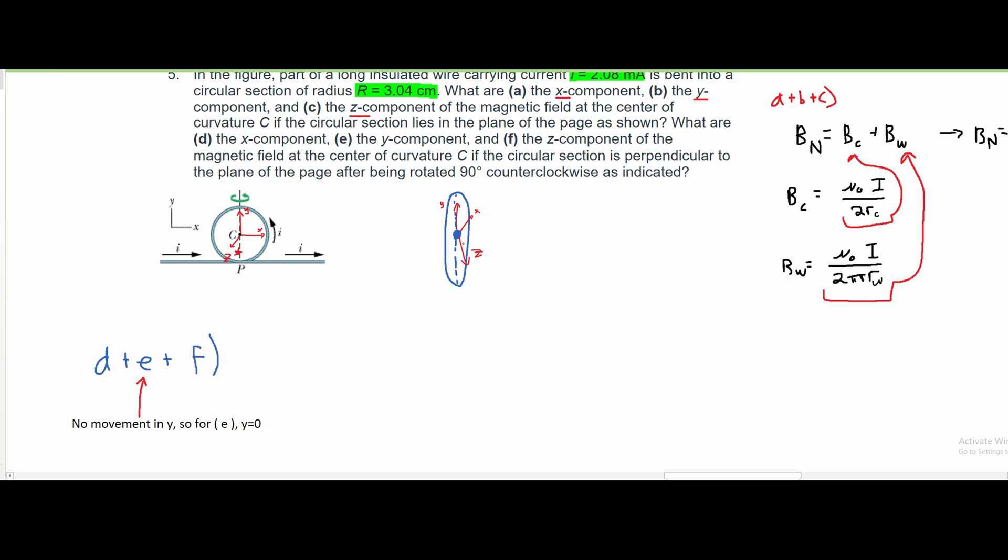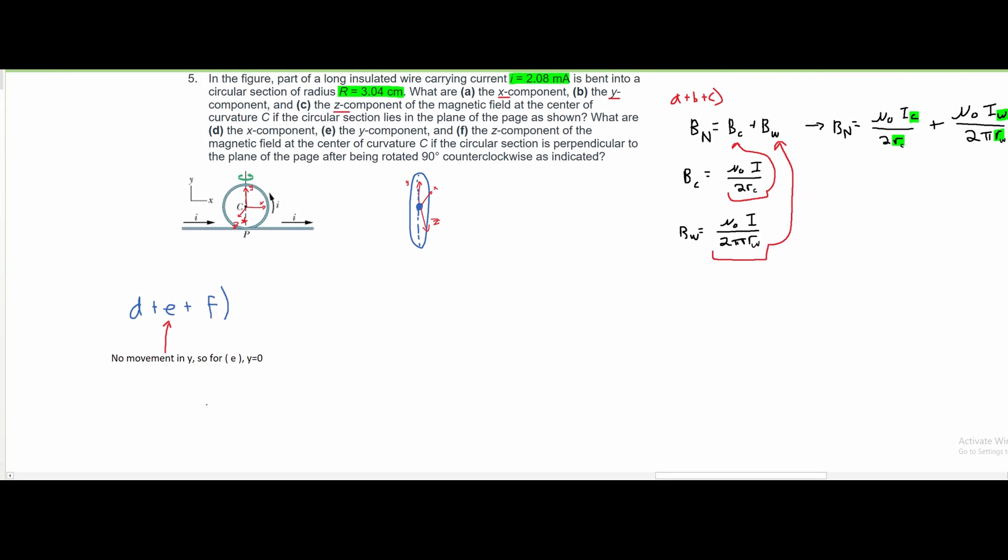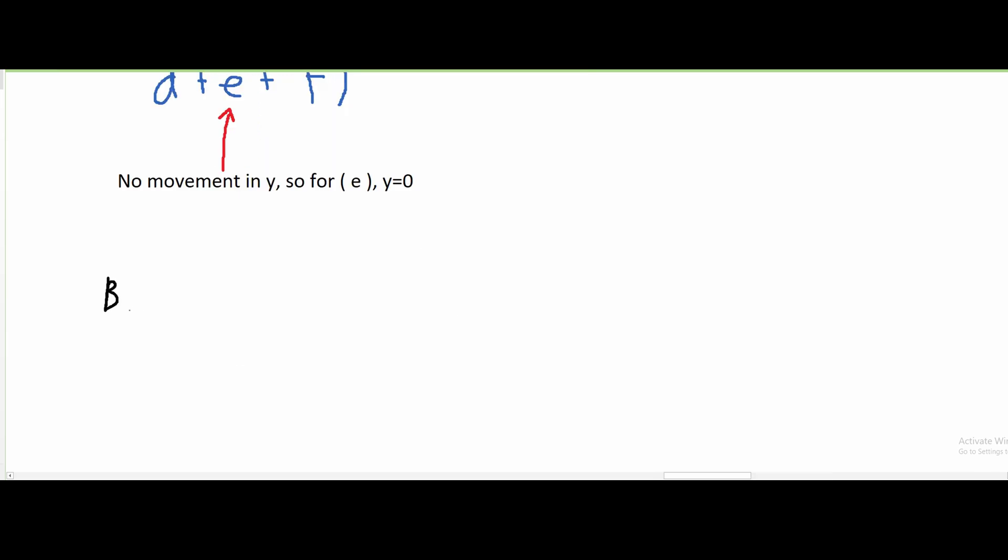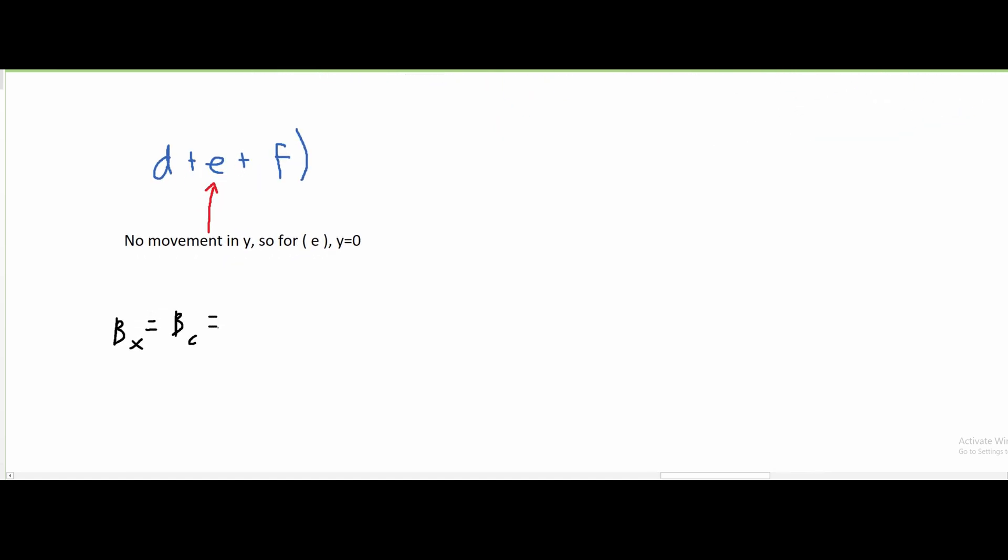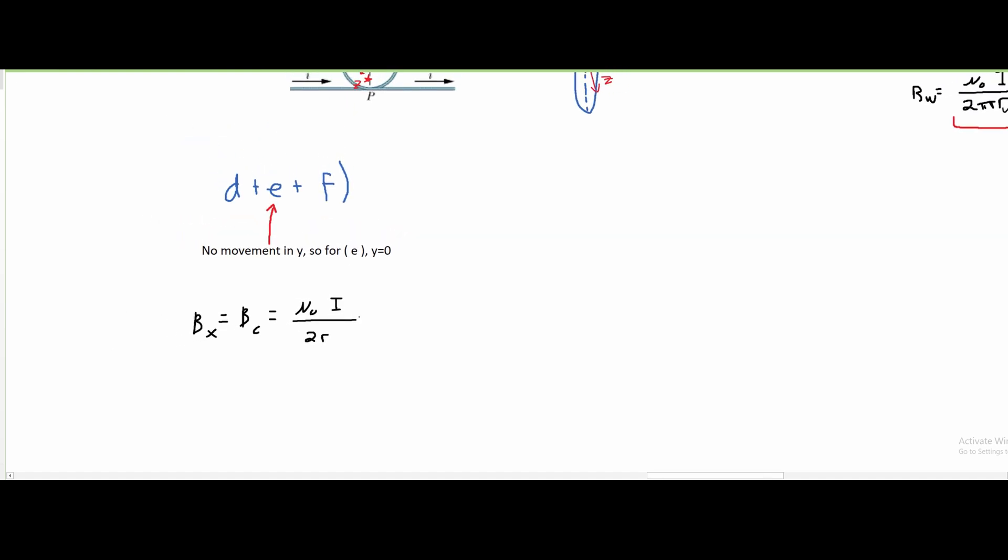Now we look at our x and z. There is movement in here since these are rotating 90 degrees. Our center is going to be denoted as B of x. The x component at C if rotated 90 degrees is going to be found when we use our previous B of c. We can now write this as our B of x and that equals B of c which equals μ₀ times i divided by 2r.